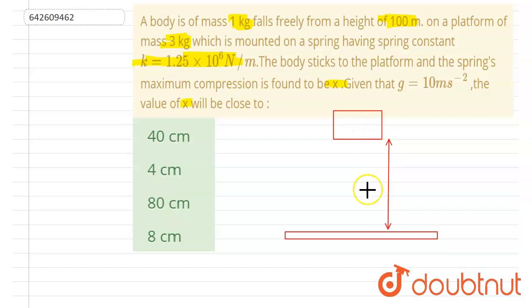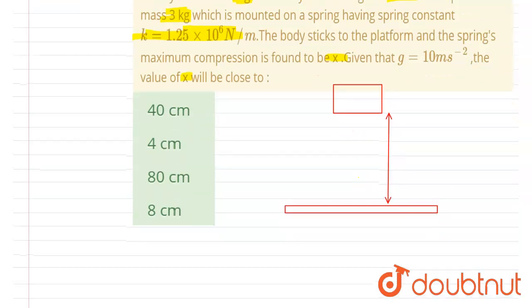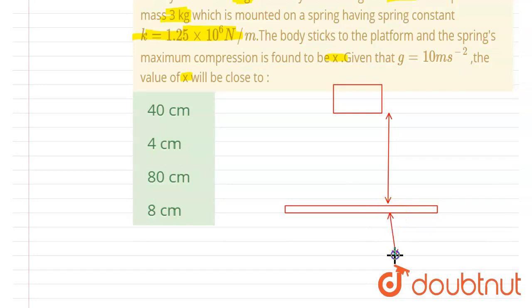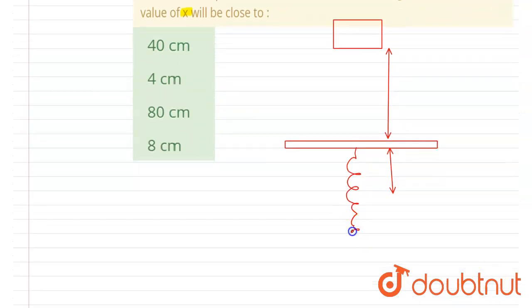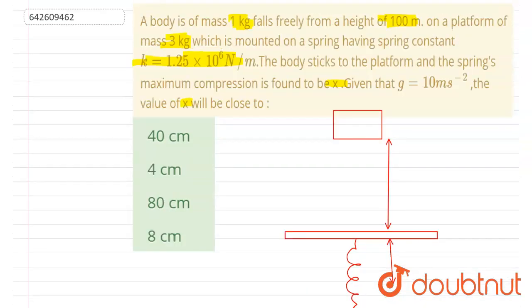And when it falls on it, the platform gets further compressed by x and you have to find out this x. And it is connected with a spring, this platform. Okay, so it is given that the mass of the platform is 3 kg and mass of the body is 1 kg.